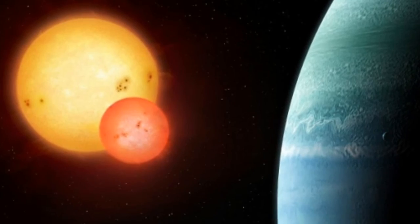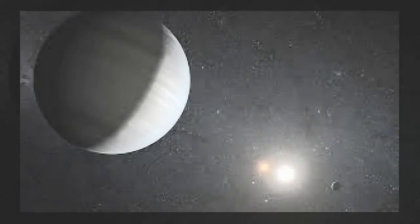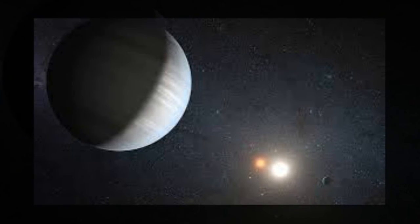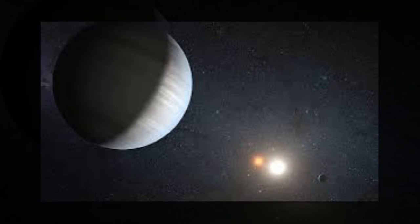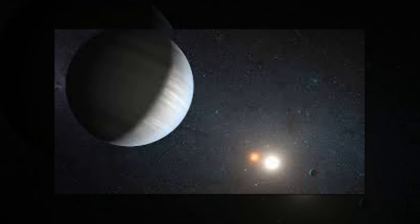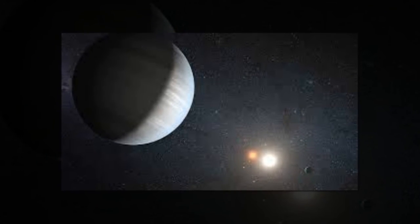Such a size indicates a gas giant, not a rocky planet. It is unable to support life despite its place in the habitable zone, according to a release. But it could have moons that are rocky, which means you could have life on the moons in this system, Cain said in the release.